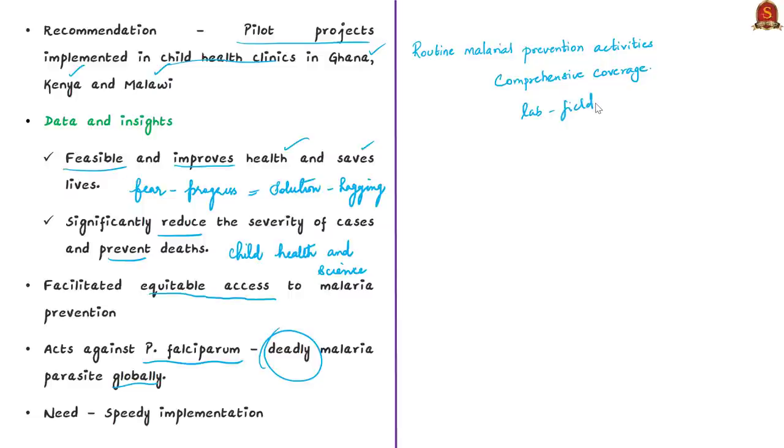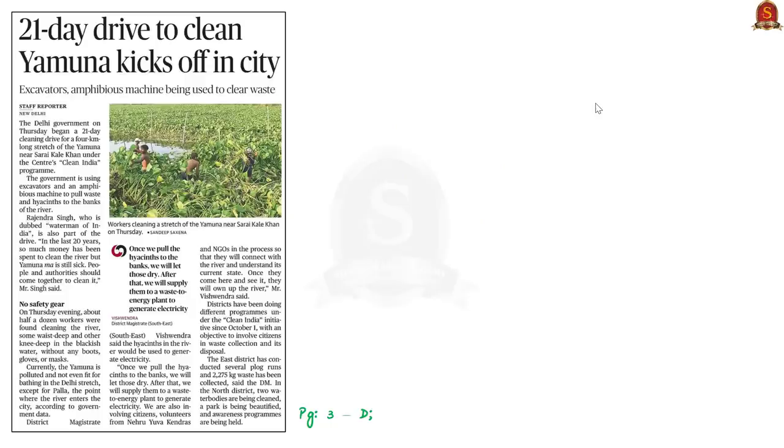Now let us take up this news article. It reports about the beginning of a 21-day drive to clean river Yamuna, started as per the Swachh Bharat Abhiyan or the Clean India program. This is a much-needed initiative because according to government data, currently Yamuna is polluted and not even fit for bathing in the Delhi stretch. In this context, let us see some important facts about river Yamuna.